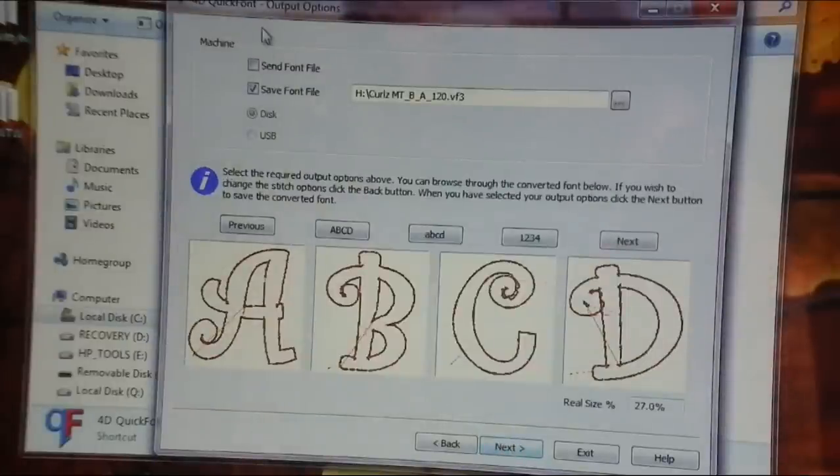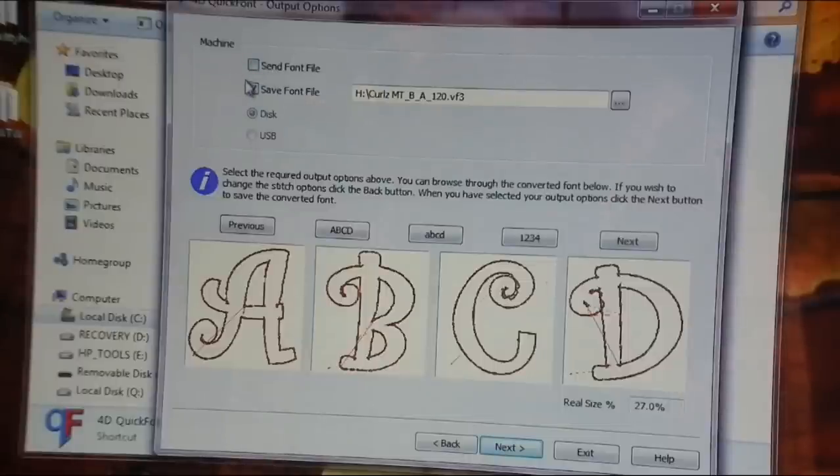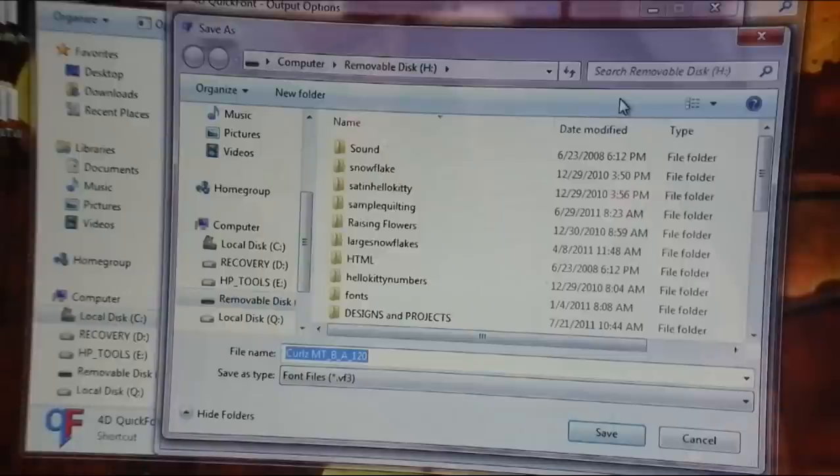So now you can either send it to your machine, and I don't want to do that. I want to go ahead and click the save font file. I already checked it, and here's what it will be called: Curls MT, and that's the file name. But click these three dots, and they've already put in the memory stick that came with my sewing machine.